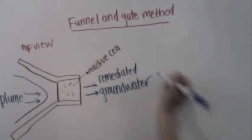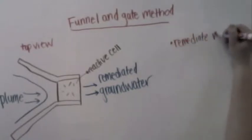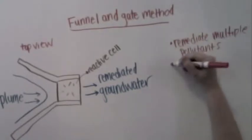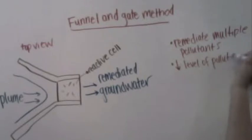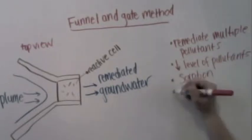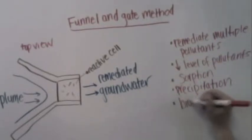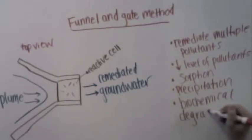The PRB remediates the water in many different ways. These include reduction, sorption, precipitation, and biochemical degradation. The processes that occur are determined primarily by the type of media used in the PRB.